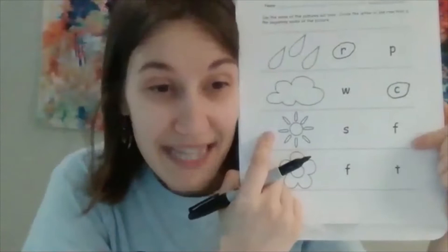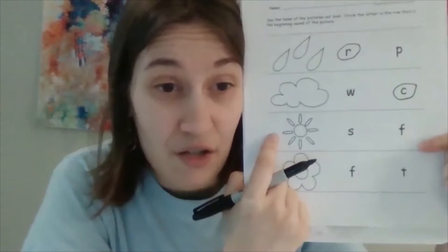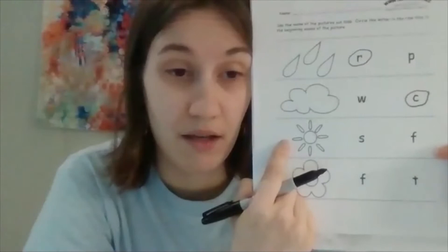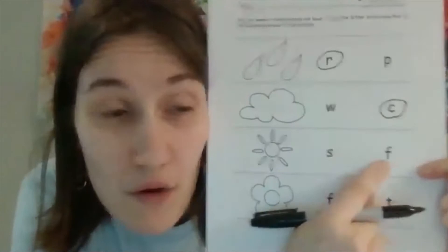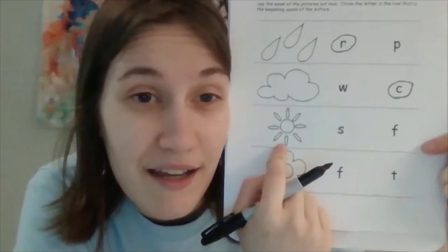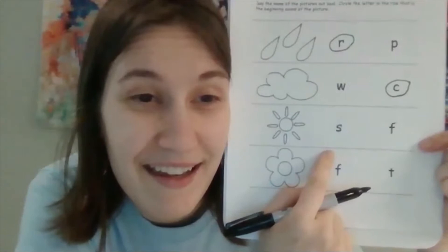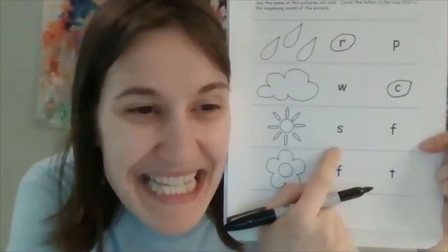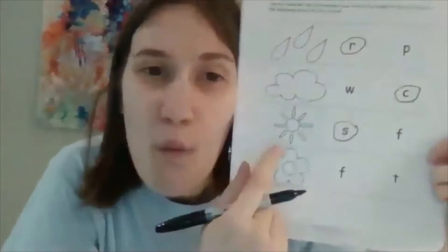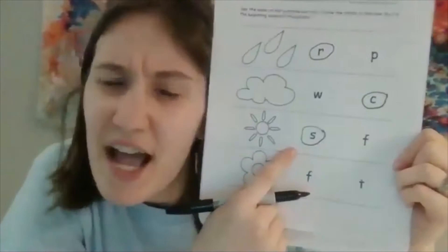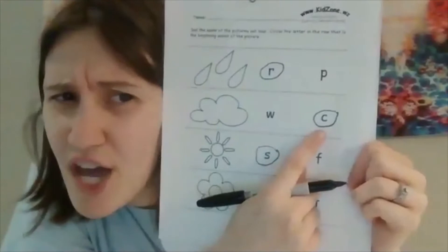Nice job, my friends. Yosef Shalom, do you want to try this one? What's this a picture of? On this one, I'm listening for the beginning sound — it's either S or S. What is this a picture of? Sun. So we're saying S. What sound does your S make? Did you hear that when you said the word sun? Nice job. You can circle the S. While you're doing this, you could think of other words that start with that sound — even words that start with R, R, R.